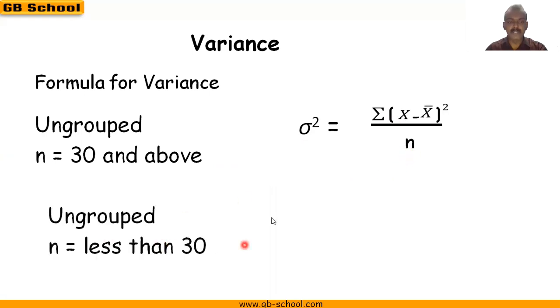Whereas for less than 30, the denominator is n minus 1 for sample size less than 30.